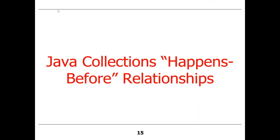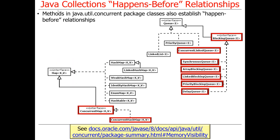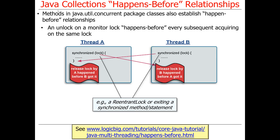Let's talk about some of the happens-before relationships supported by Java collections. Various methods in the java.util.concurrent package classes also establish happens-before relationships. We've talked about things like ConcurrentHashMap, monitor locks, Java ReentrantLocks, and so on. The thing to remember is that an unlock on a monitor lock happens-before every subsequent acquisition on the same lock.